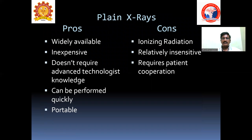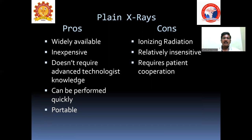What are the advantages and disadvantages of x-rays? X-rays are ionizing radiation and can produce stochastic and non-stochastic effects in the human body; they require patient cooperation. However, they are a first-line investigation, highly inexpensive, cheap, and available everywhere. They don't require advanced technologies to operate, can be performed easily, and are portable — in trauma patients, we can bring portable x-rays to the patient's side and take the x-ray.